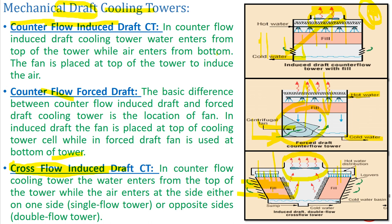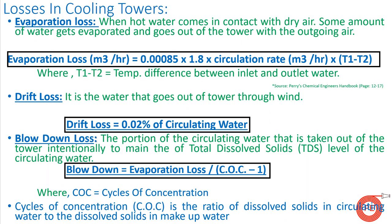In a cross flow cooling tower, the hot water distribution is on the sides of the tower, not centrally. Louvers facilitate the movement of air inside. Hot water comes from the top and cold water exits from the bottom. Cross flow towers can be double flow — where air enters from both sides — or single flow, where air enters from only one side.